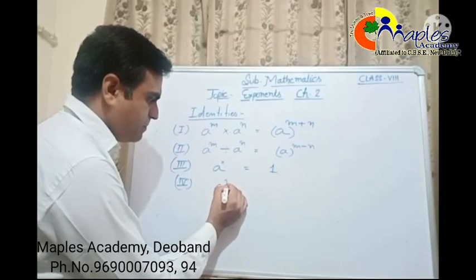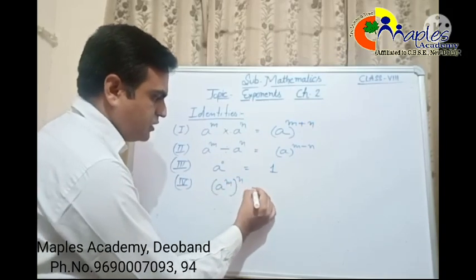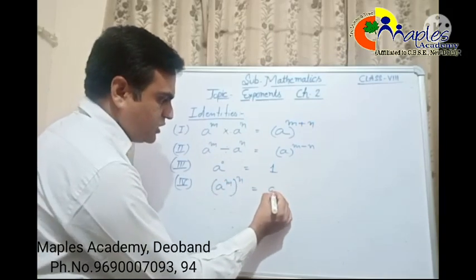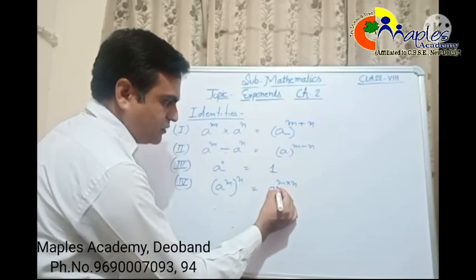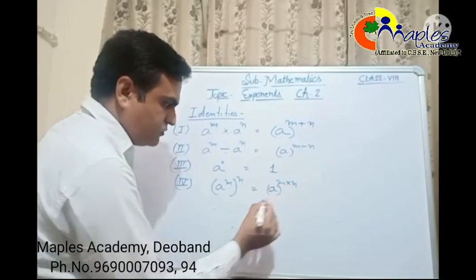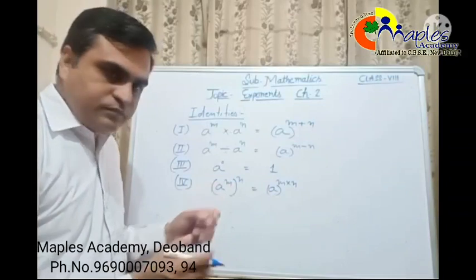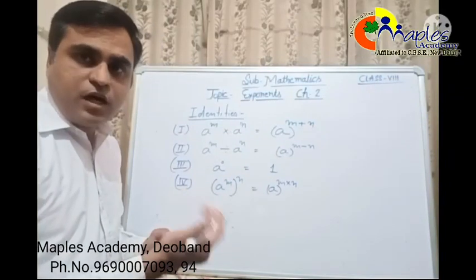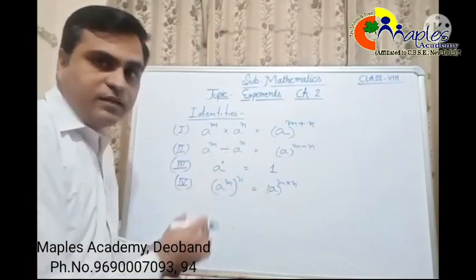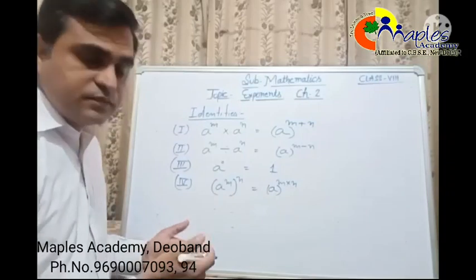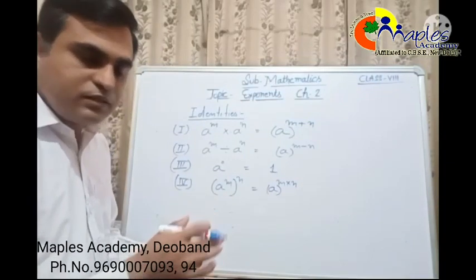If one power is in a bracket and another power is outside the bracket, then we have to multiply these powers — that is a raise to the power m into n.